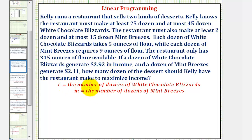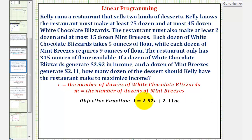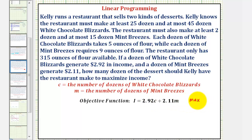Notice each C generates $2.92 in income, and each M generates $2.11 in income. So our objective function, or objective equation, is going to be I, for income, equals 2.92 times C plus 2.11 times M. And our goal here is to maximize this income, given the restrictions or constraints provided in the problem.